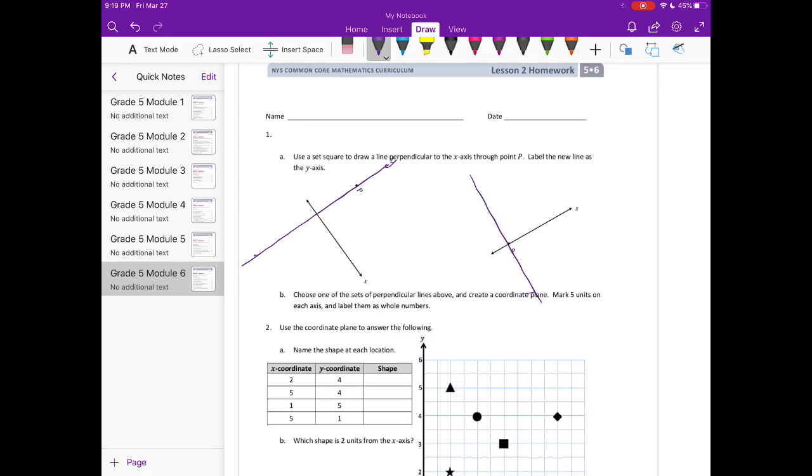And B says choose one of the sets of perpendicular lines above and create a coordinate plane. Mark five units on each axis and label them as whole numbers. I'm just going to use this one. So there's my origin, and then on my x-axis I'll have one, two, three, four, five. Let's label them. And my y-axis will have five: one, two, three, four, five.